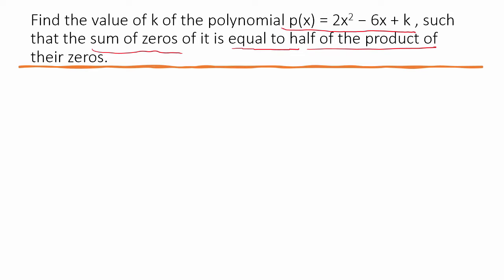So, we have to find a polynomial which has been given where one of the terms is unknown k, and we have been given a relationship between sum of zeros and product of their zeros. Now we have to find it. Let us see what to do.